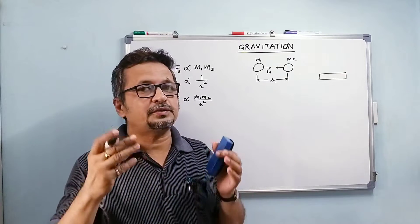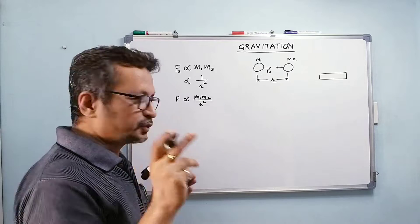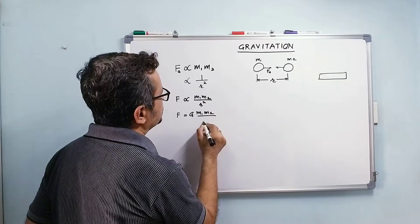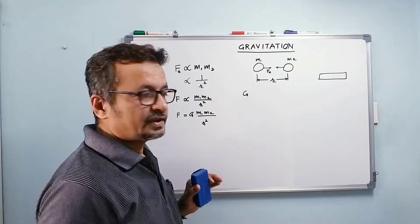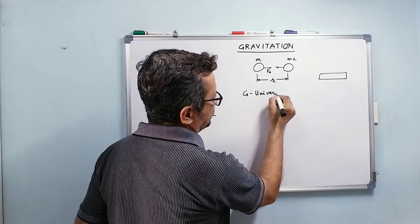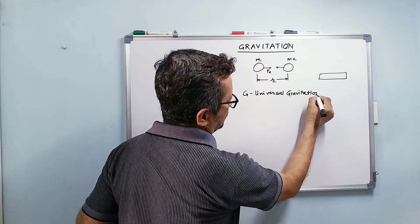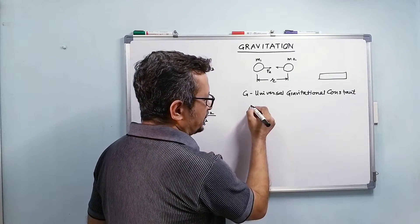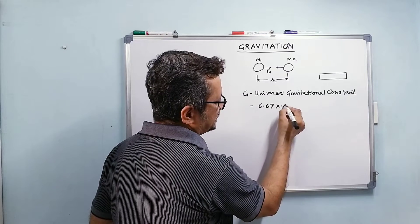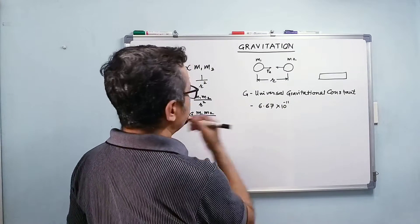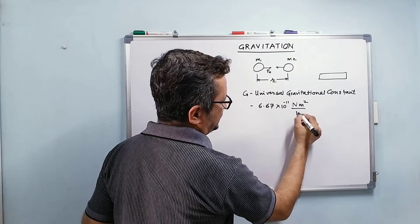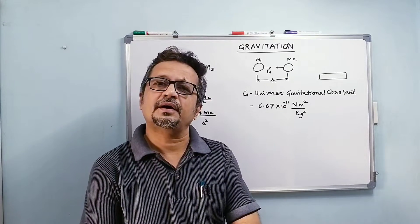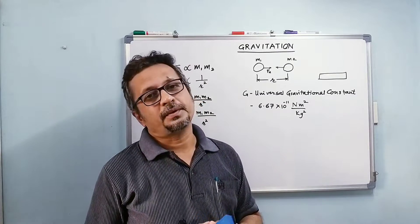Combining both proportionality statements, I can write Fg proportional to M1·M2 over R squared. To convert this into a mathematical equation, I introduce a constant of proportionality, giving F = G·M1·M2 / R squared. This G is the universal gravitational constant. Its value is 6.67 × 10⁻¹¹, and its units are Newton meter squared per kilogram squared. You can convert this into base SI units using the base SI units of Newton.